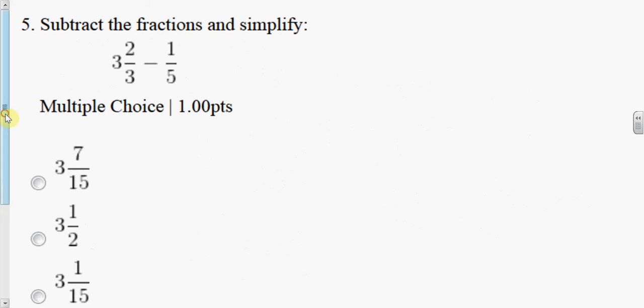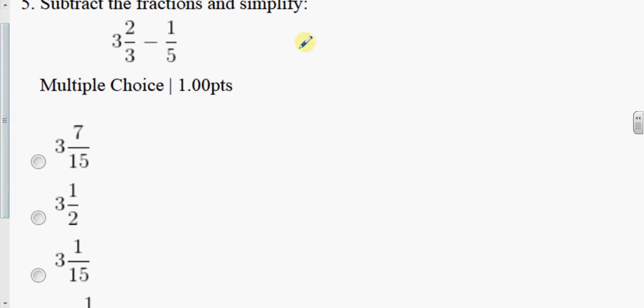So now we're going to subtract these two fractions. This is 3 and 2 thirds minus 1 fifth. So we're going to convert these fractions. I'll look at my denominator. 3 and 5. So the LCD, the least common denominator, will be 3 times 5. They have nothing in common. No factors in common. So the least common denominator is 15.